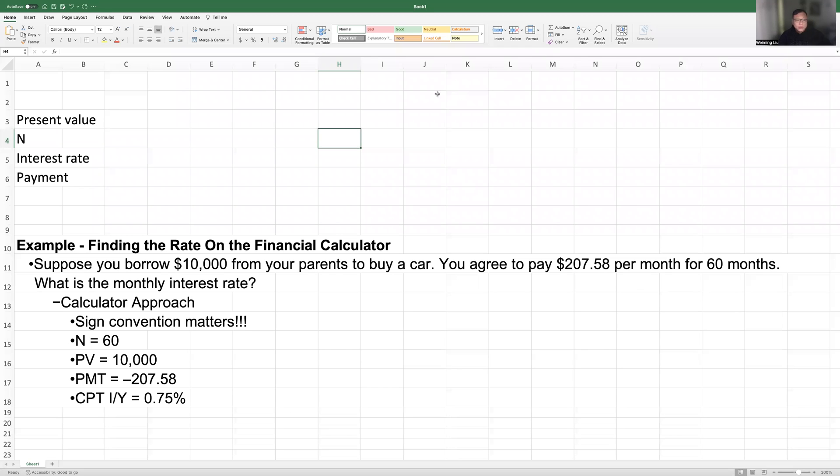Today I'm going to show you how to find the rate of financial questions. Many times we have worked on how to find out the present value, future value when the interest rate is known, when the discount rate is known. However, it could happen that we have all the other information available. We know the present value, we know the future value, we know the payment. The only thing we don't know is the interest rate, the discount rate. So how can we find the discount rate?